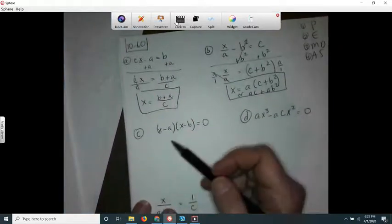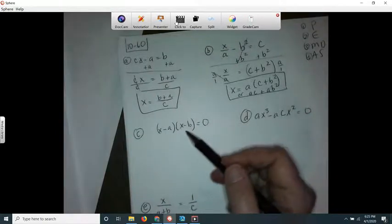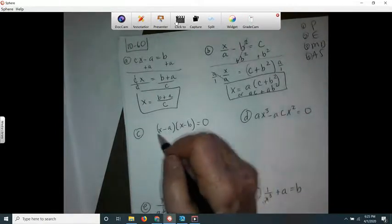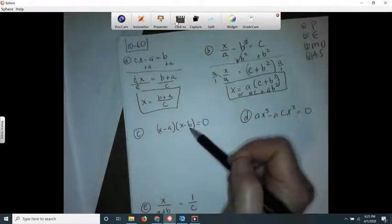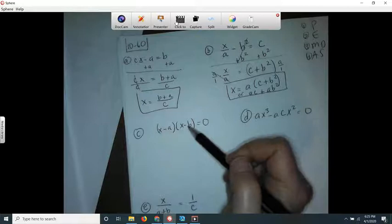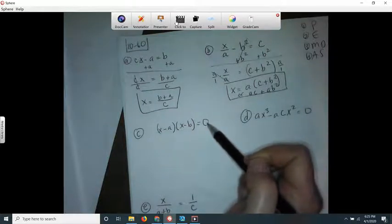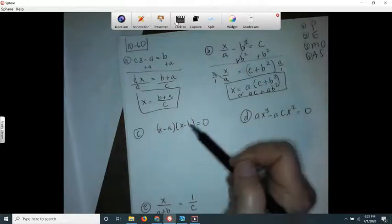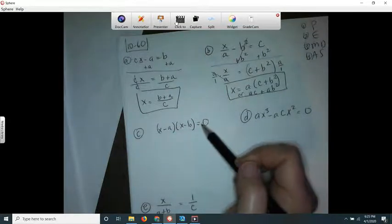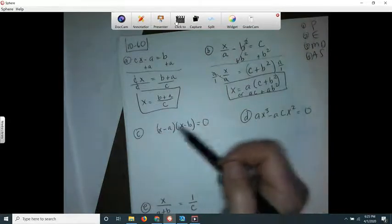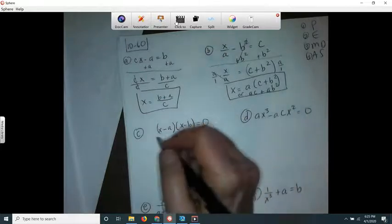So on this one, I'm going to use the zero product property because I have something multiplied by something else. If you have two things multiplying against each other and the answer is zero, that means either that was zero or that was zero, because there's no way you can multiply two things together and have them equal zero unless one of them is zero. So you're going to set each one equal to zero.